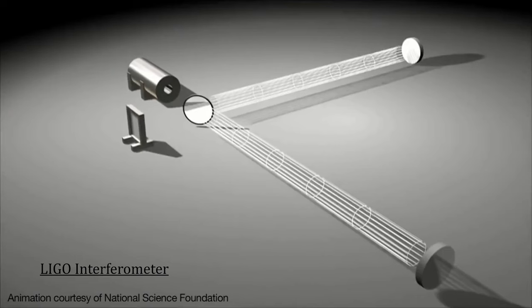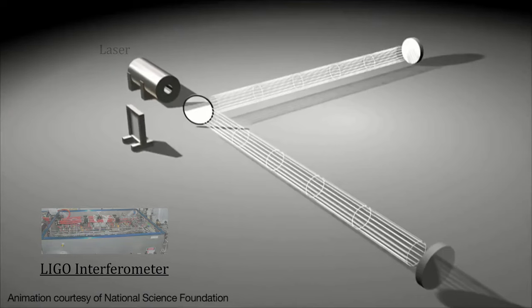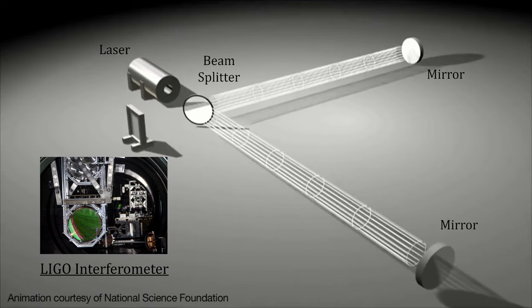Here are the L-shaped LIGO instrument components. It has a powerful near-infrared laser with an output after amplification that reaches 200 watts of 1064 nanometer light. The beam splitter and mirrors that act as test masses are 40-kilogram objects suspended via fused silica-glass fibers to minimize noise due to vibrations.